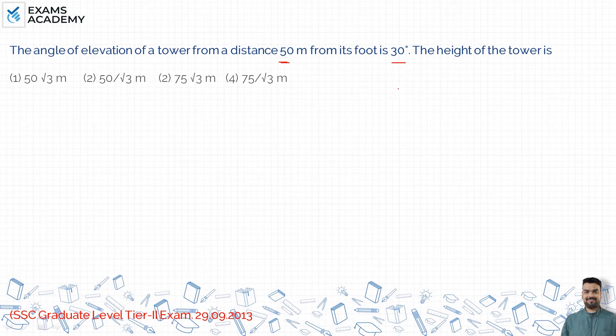Let's suppose a tower, 50 meter distance given. The angle of elevation of the tower from a distance 50 meters, the angle of elevation is 30 degrees.